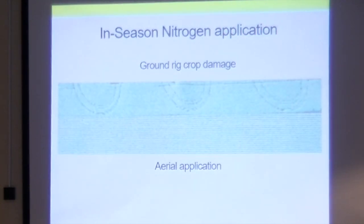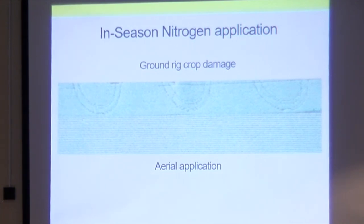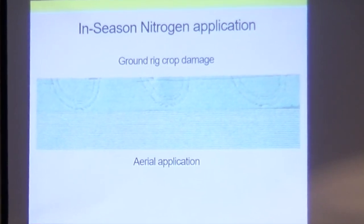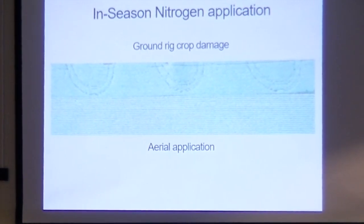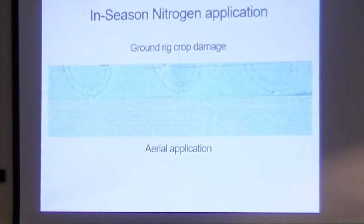These next six slides give a brief overview of our project. In dryland corn production there are two application choices: ground or air. One consistent advantage of air over ground is no crop damage due to stand loss from wheel tracks. Also, if the field is too wet for ground applicators, a plane can get the job done.